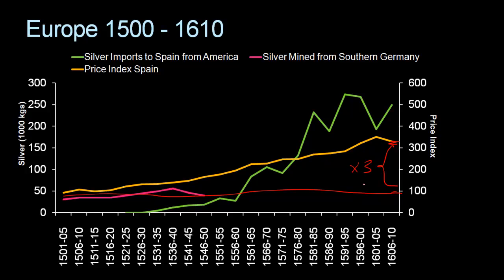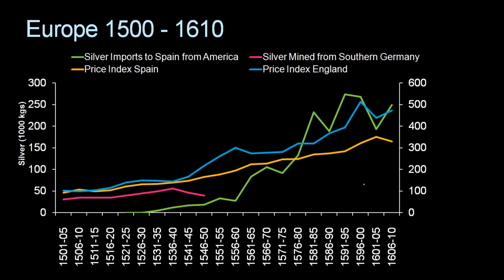And because the Spanish were sending a lot of this new silver that they had imported from the New Americas to the rest of Europe, you saw inflation in the rest of Europe as well. Here, for instance, I've added the price index in England, and you can also see an increasing price level across that entire century.